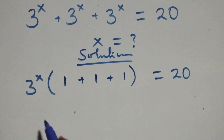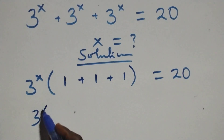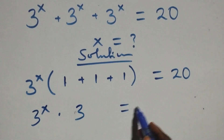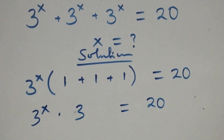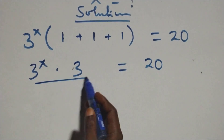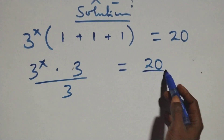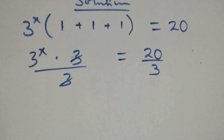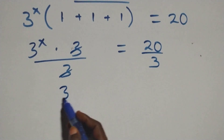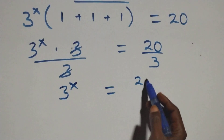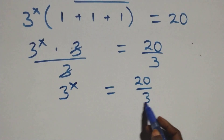This becomes 3 raised to power x times 3, equals 20. The next step: divide both sides by 3. The 3's cancel each other, and we have 3 raised to power x equals 20 over 3.